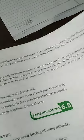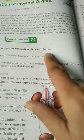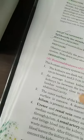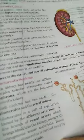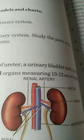Experiment number 7.1 is to identify the structure of the urinary system through models and charts. Here you have to write only the external features of the urinary system — no need to write the internal features of a kidney or the structure of a nephron. Draw the diagram neatly and label all parts.